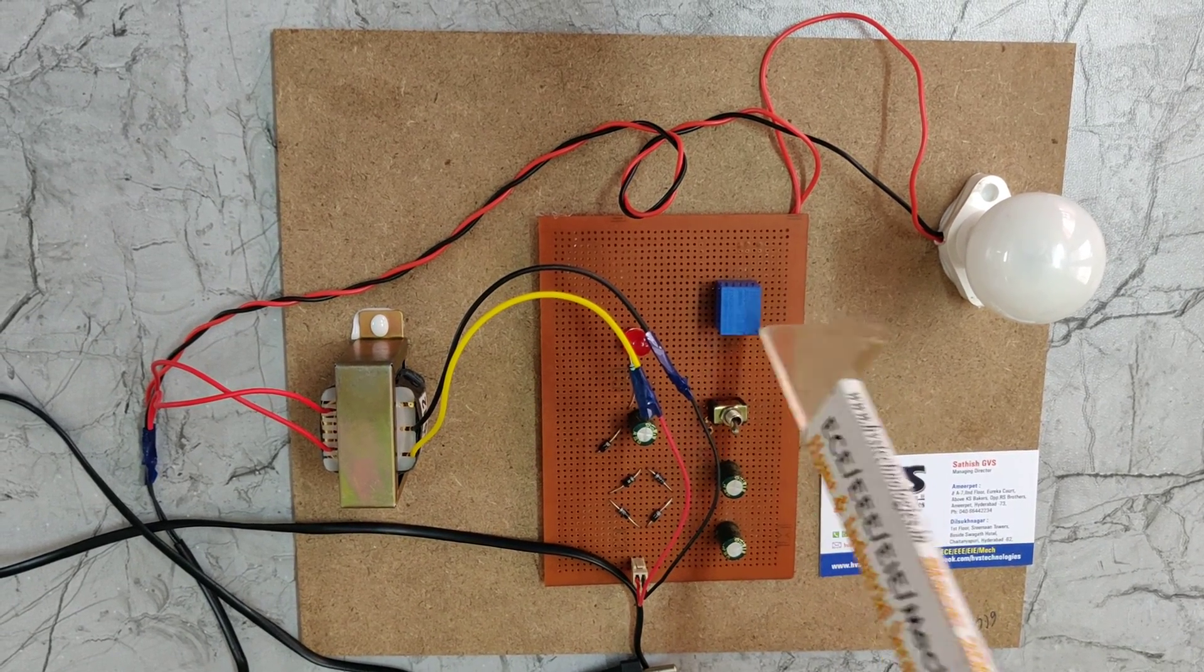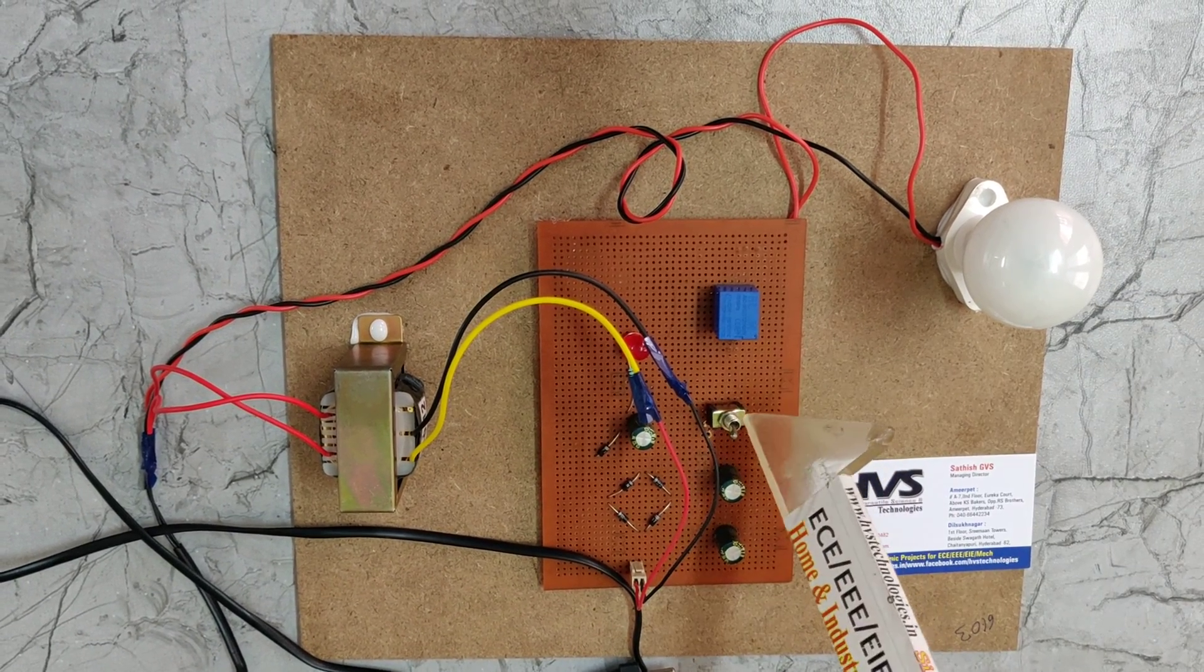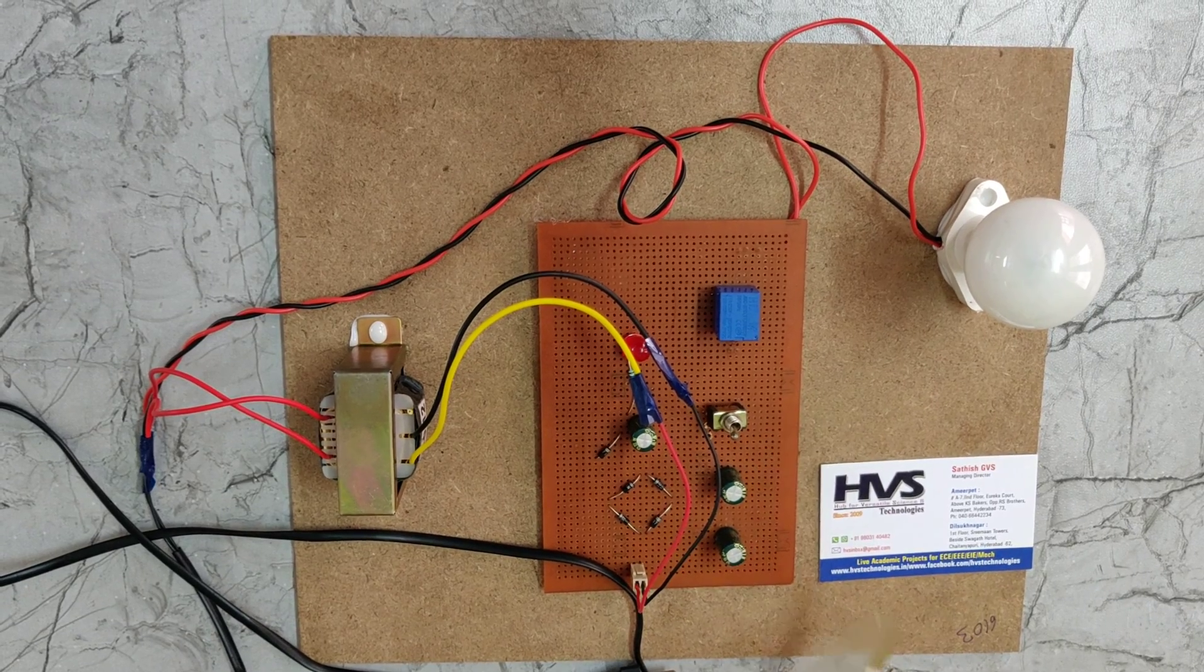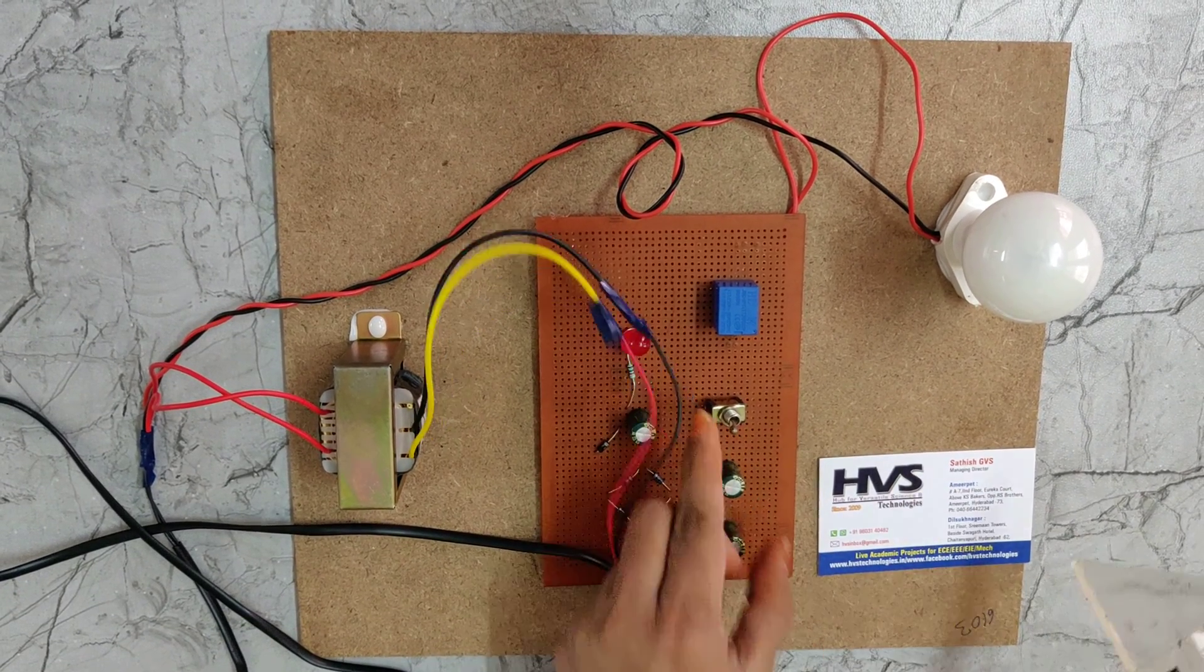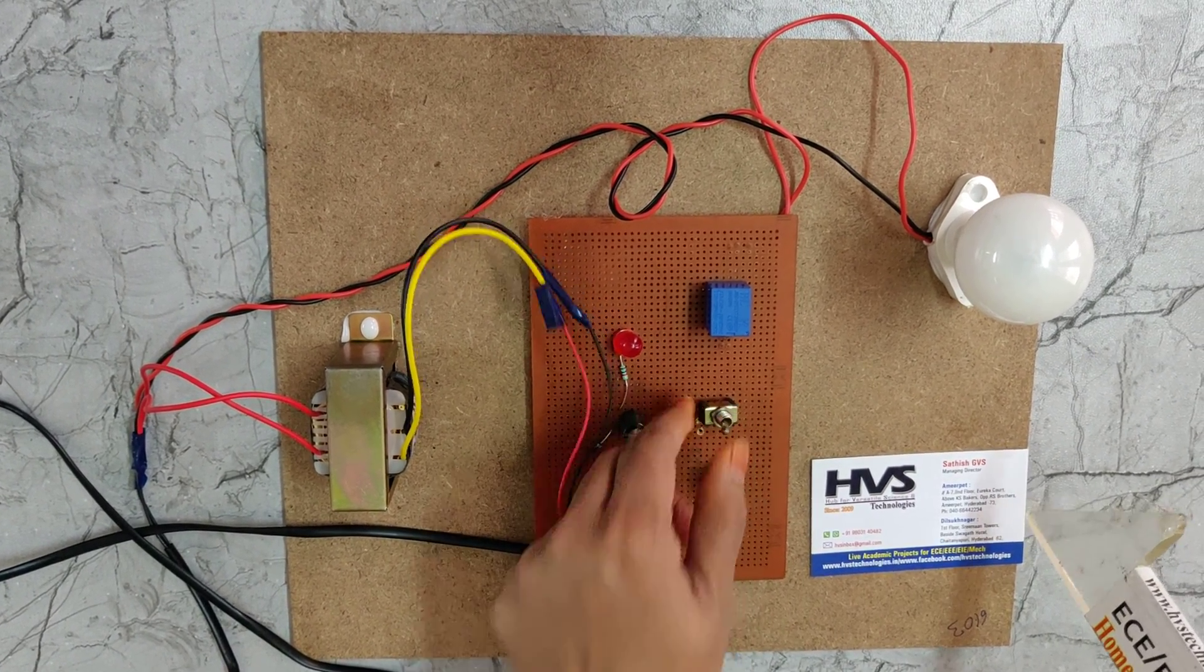Here the relay works as a switch to turn on and off the load. This is a toggle switch we are using to turn on and off the load manually.